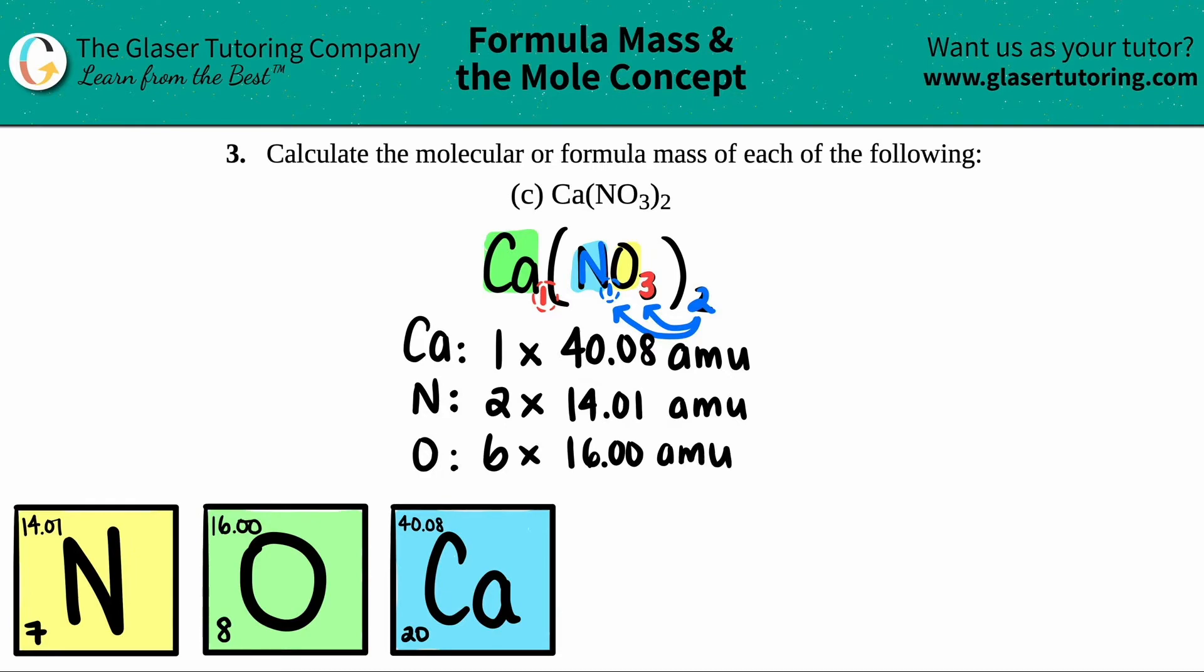So now let's just multiply these numbers across and see what we get. Well, one times 40.08 AMU is 40.08 AMU. Two times 14.01 is 28.02 AMU. And then we got six times 16. I believe that that's 96.